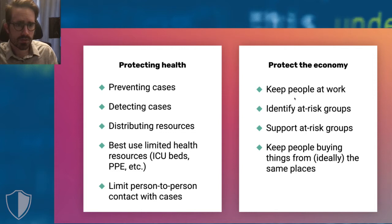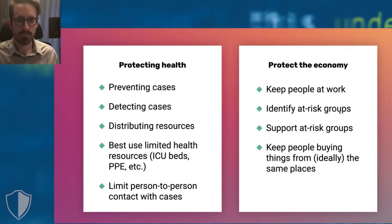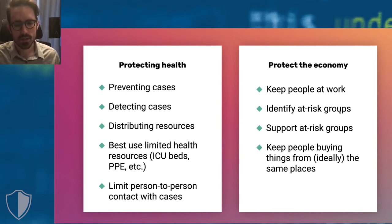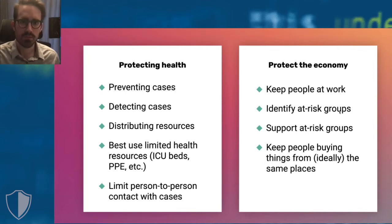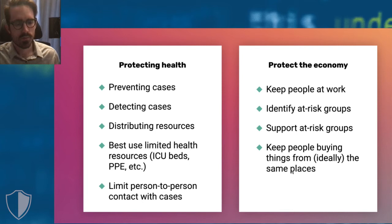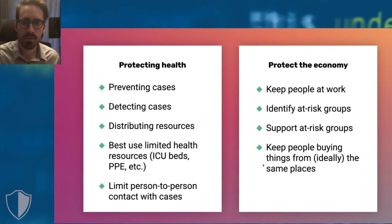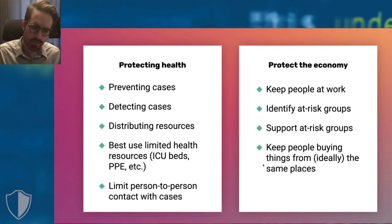The other group is around protecting the economy: keeping people at work, identifying at-risk groups. Any response to fight the pandemic affects different parts of the population differently. Technology can help identify groups being adversely displaced as a result of our response to the disease, and then leverage that identification to support those at-risk groups. How do we keep the economy going — keeping people working and the same small businesses able to have revenue?